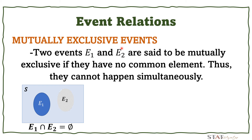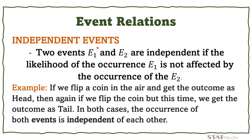Independent events: two events E1 and E2 are independent if the likelihood of the occurrence of E1 is not affected by the occurrence of E2. For example, if I flip a coin and get heads, then flip again and get tails, the occurrence of both events is independent of each other. The first toss is independent of the second toss. This is an example of an independent event.